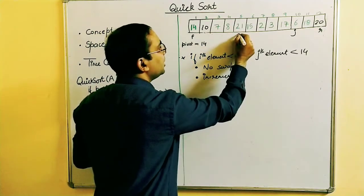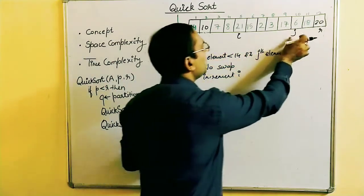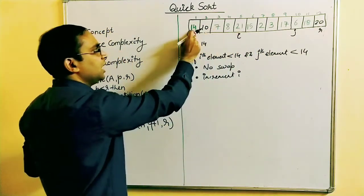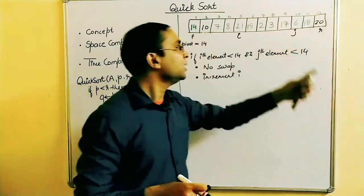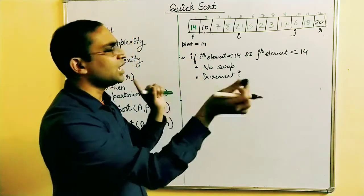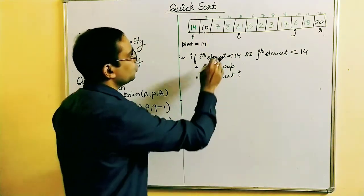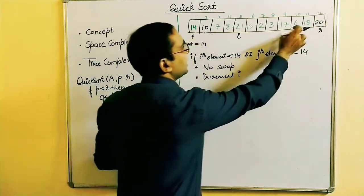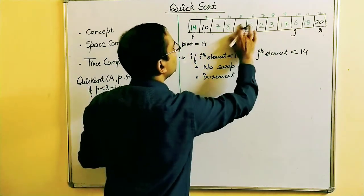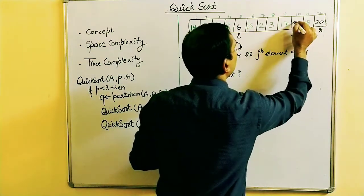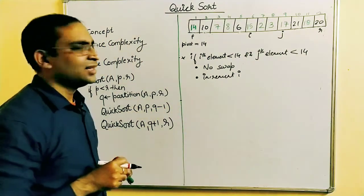We increment I and keep J in place. Now I is at 21 and J is at 6. I is 21, which is larger than 14, and J is 6, which is smaller than 14 — this is condition one. We need a swap: 6 comes to I's position and 21 goes to J's position. Then we increment I and decrement J.